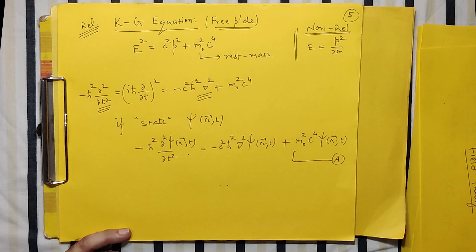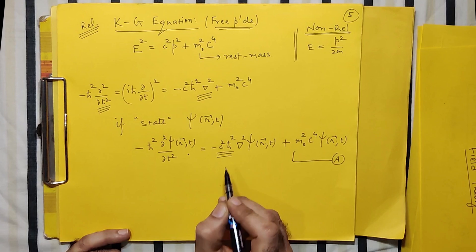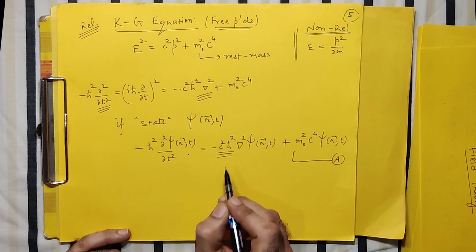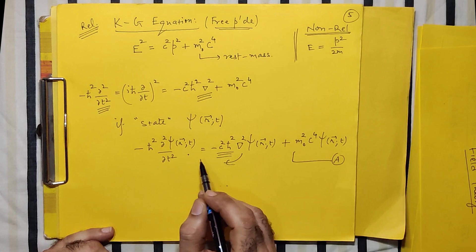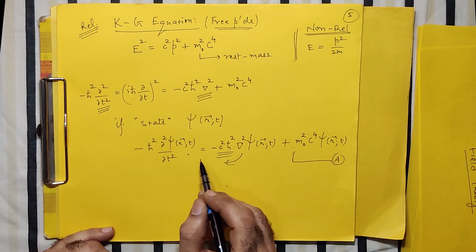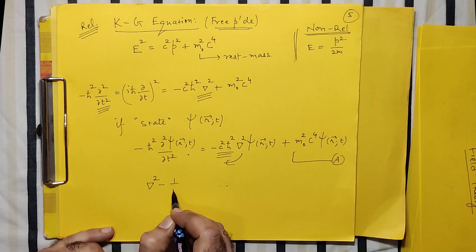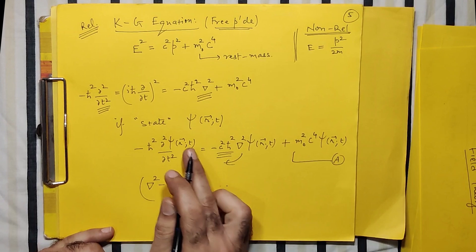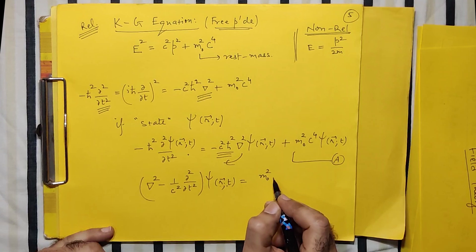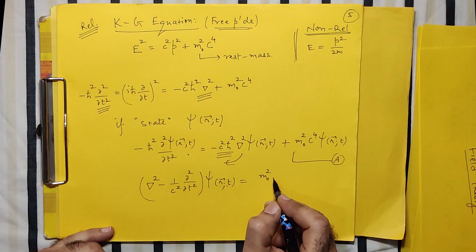We can simplify this by dividing both sides by c²h-bar², then moving the nabla² term to the left side. After rearranging, we get: nabla² psi minus (1/c²) del²psi/del-t² = (m₀²c²/h-bar²) psi. This is a simpler mathematical form of the Klein-Gordon equation.